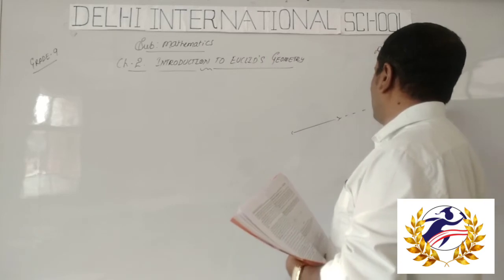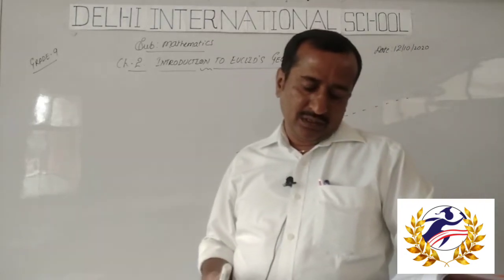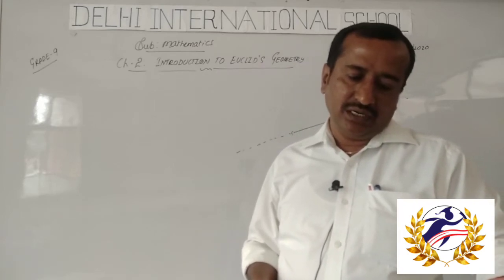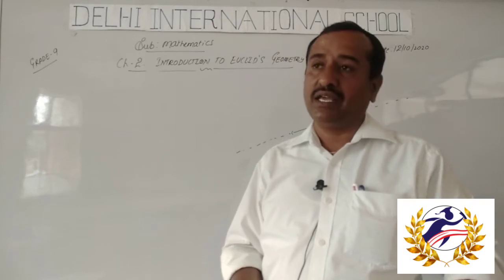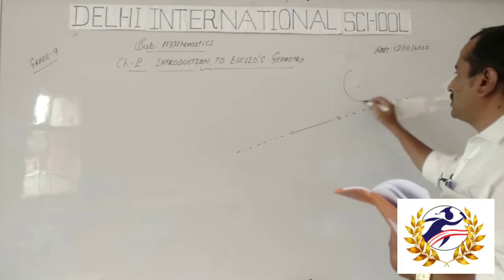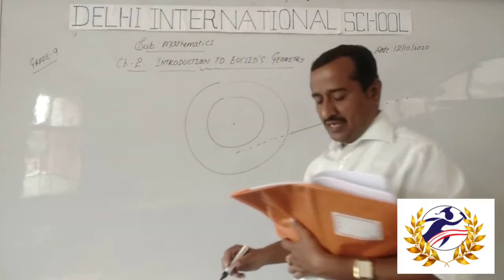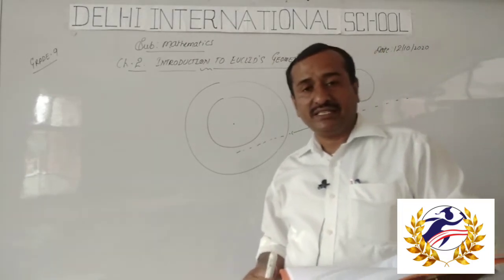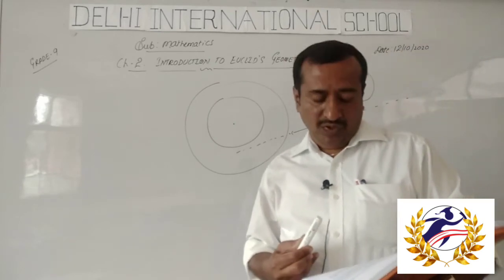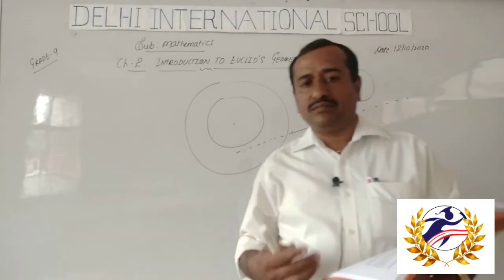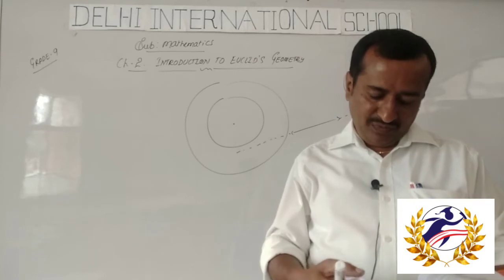The third postulate: a terminated line can be produced indefinitely — if you have a line segment, you can extend it. The fourth: a circle can be drawn with any center and any radius. If you draw a center, you can draw a bigger circle with the same center as well. The fifth: all right angles are equal to one another — all right angles are 90 degrees.